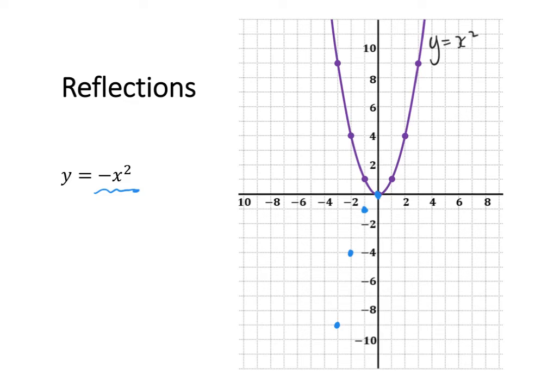1 and 1 will become 1 and negative 1. 2 and 4 will become 2 and negative 4. And 3 and 9 will become 3 and negative 9.